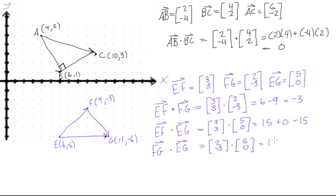And we find this to be 2 times 5 is 10, plus negative 3 times 0, plus 0, is equal to 10. So there we go. We tested each possible dot product of these three vectors, and none of them equaled 0, so this triangle is not a right angle triangle.